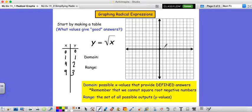So we'll have (0,0). We have (1,1), (4,2), and (9,3). So our graph looks something like this.